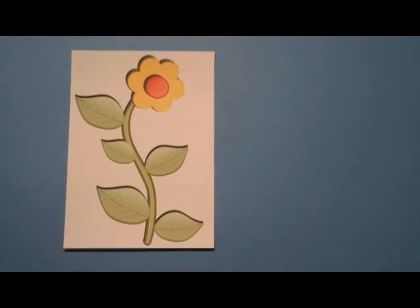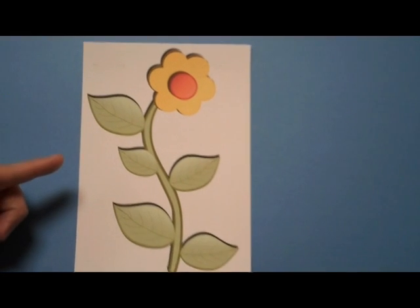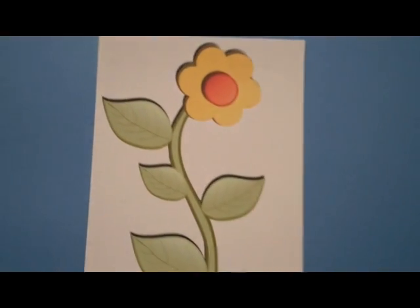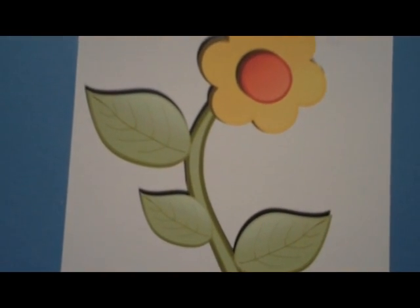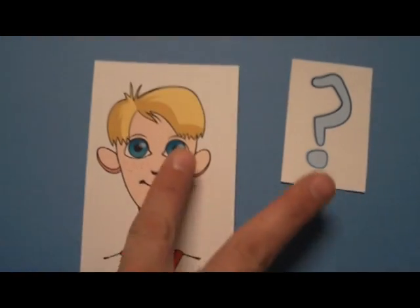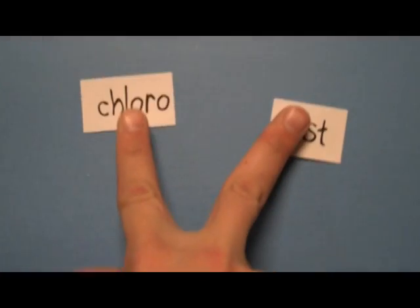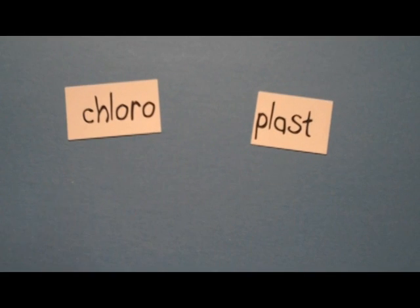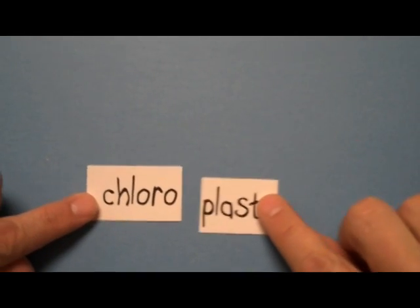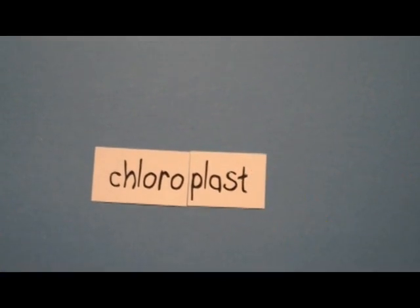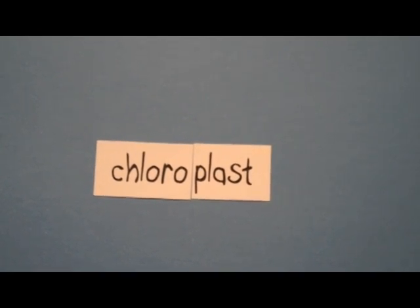Take a closer look. Here we have a plant. Our plant has leaves, and if we take a closer look at our leaves, we would see that the cells are full of chloroplasts. Chloro meaning green, plast meaning small structure — a chloroplast is a green small structure that's the site of photosynthesis.